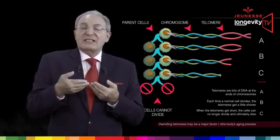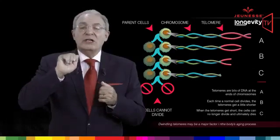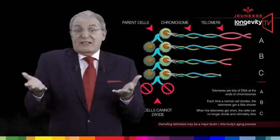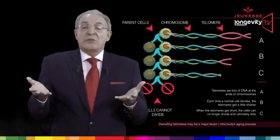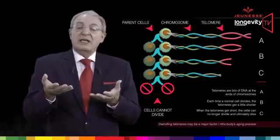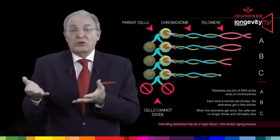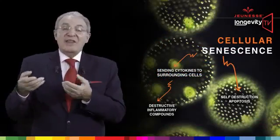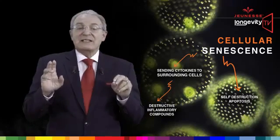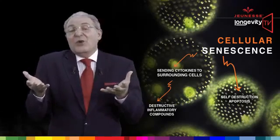Meanwhile, after 50 to 70 divisions, the cells in our body reach a stage where there is no more telomere to protect our DNA. Those cells can no longer reproduce themselves — they reach what we call a retirement-like state in which they die or no longer divide. This endpoint is called senescence, and when senescence reaches a majority of cells, we die of old age.